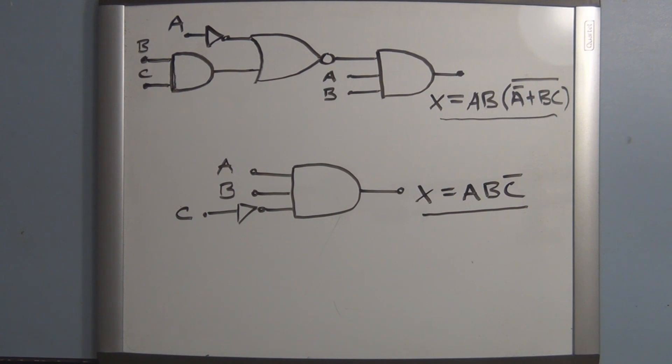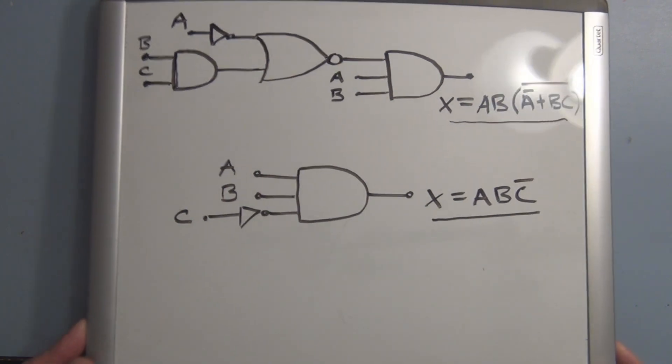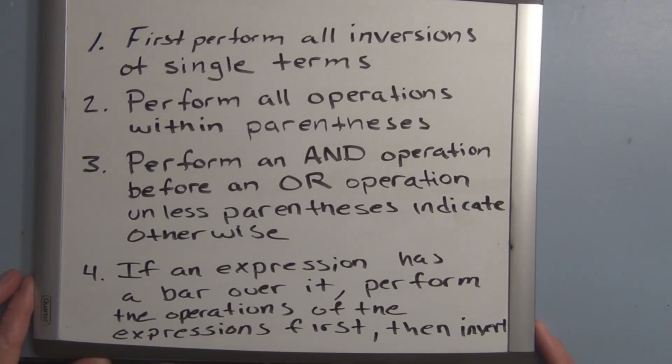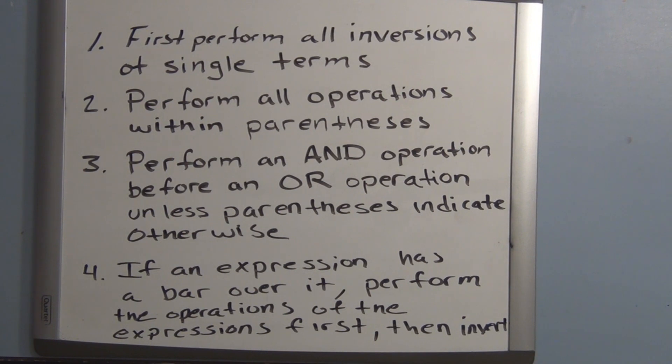So we could just go ahead and plug in every combination of ones and zeros in a truth table to show that these two circuits are equal and produce the same outputs for a given input. But there are some rules that we should agree to before trying to simplify this and just like in ordinary algebra. And these are the rules that if you were to plug in ones and zeros for those inputs and determine the output.